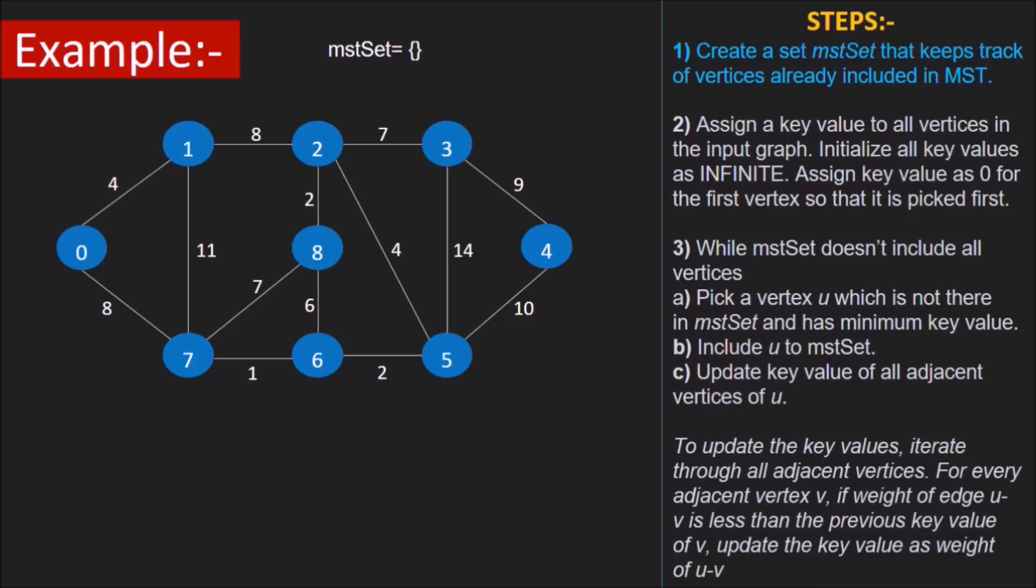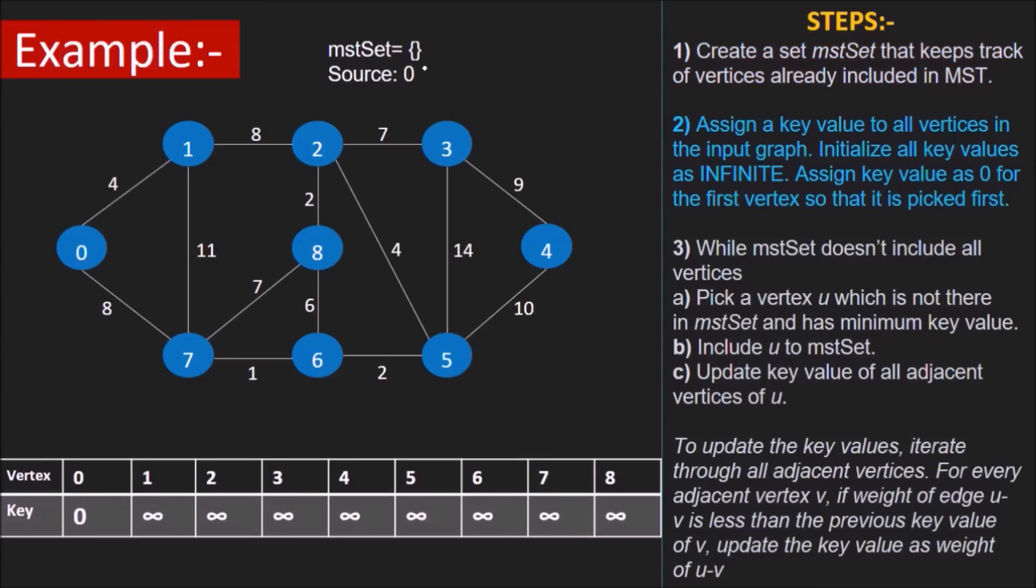The first step says create an MST set which contains all the vertices in the minimum spanning tree. Initially, this set will be empty of course. Let's look at step 2. It says that initialize the key of all vertices except the source vertex to infinity. The source vertex is assigned key 0. Basically, the key of every vertex stores the weight of the minimum weighted edge it is connected to such that the other end point of that edge is a vertex in MST set. It will be clearer as we proceed through the example.